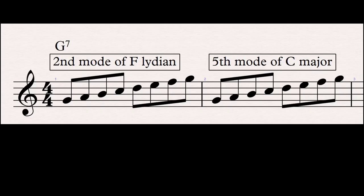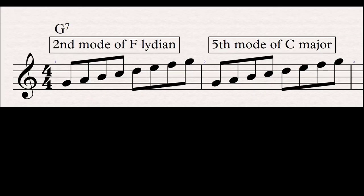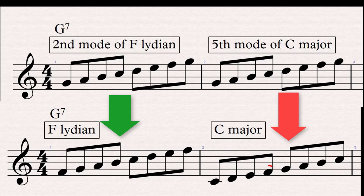Look at this chord G7 and the two modes associated with it. If you call any of these modes a scale — Mixolydian or Lydian if you're a feminist — then the tonal centre would be G. However, I have called these modes not scales, and because of that the tonal centre is different. The first one, mode 2 of F Lydian, is part of the collection of F Lydian, a vertical scale, and therefore operates as a mode of a vertical scale.